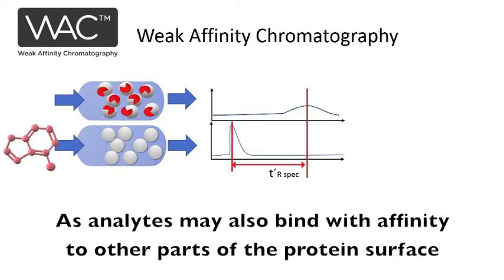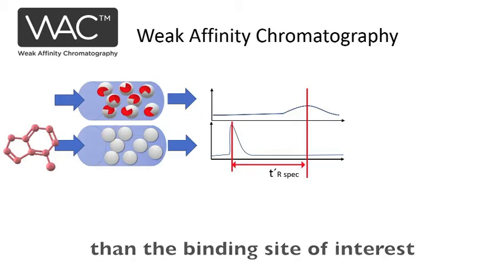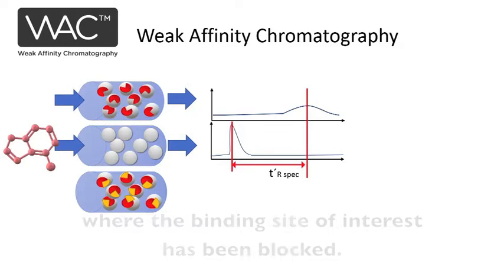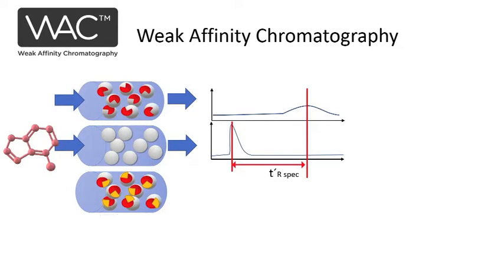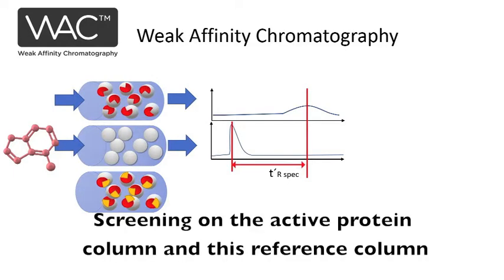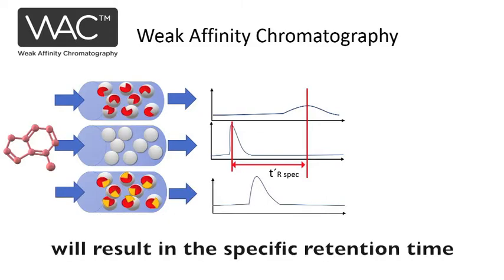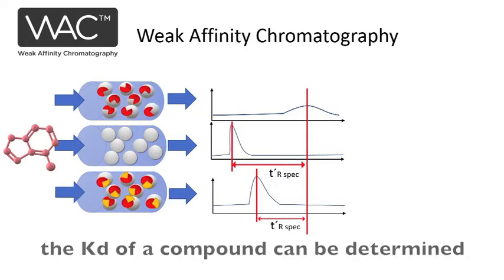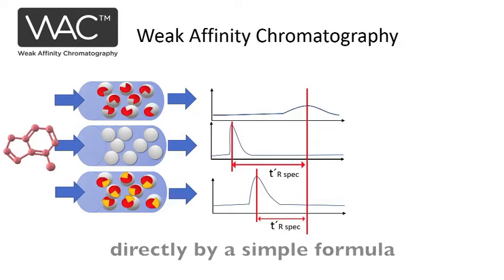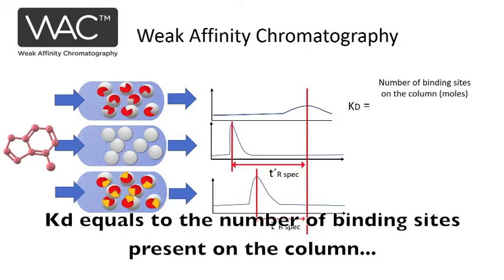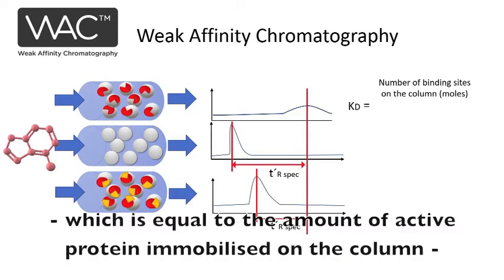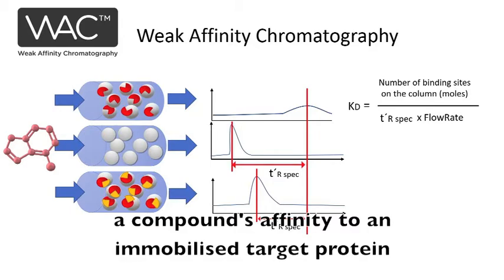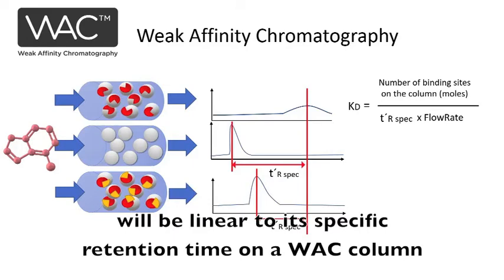As analytes may also bind with affinity to other parts of the protein surface than the binding site of interest, one can also use a reference column with immobilized target protein where the binding site of interest has been blocked. The active site can be blocked either by a covalent binder or a high affinity binder present in the mobile phase. Screening on the active protein column and this reference column will result in the specific retention time due to interactions with the active binding site of interest. From the specific retention time, the Kd of a compound can be determined directly using a simple formula: Kd equals the number of binding sites present on the column — equal to the amount of active protein immobilized — divided by the specific retention time and the flow rate. This means a compound's affinity to an immobilized target protein will be linear to its specific retention time on a WAC column, and its Kd can be determined directly from single concentration screening by WAC.